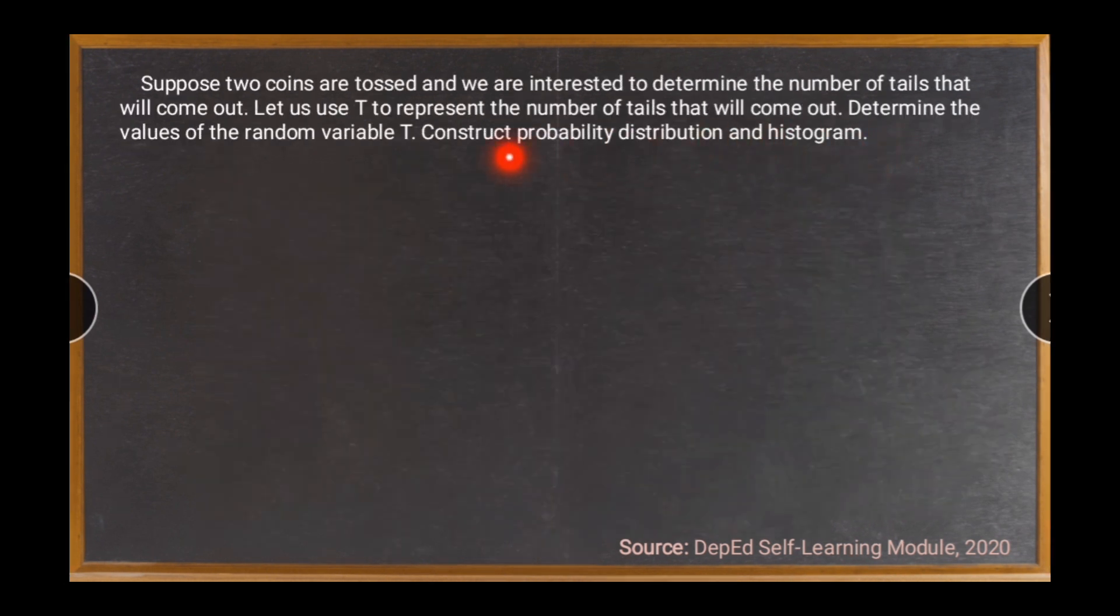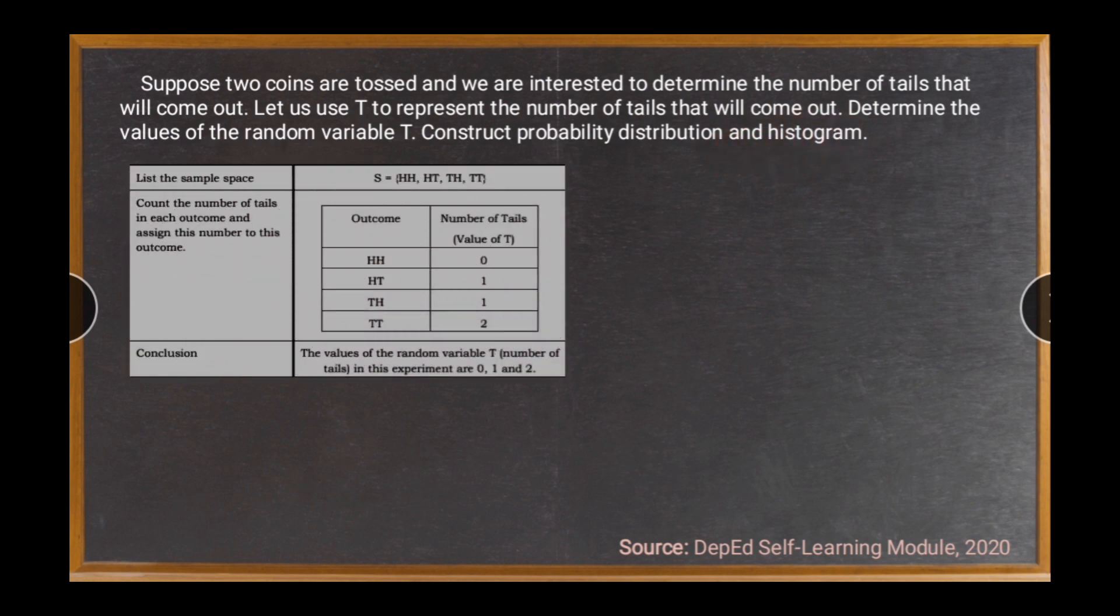We will consider again the given situation, but we will add another requirement that is construct probability distribution and histogram. So for our solution, we will consider again our previous output because we will also use similar scenario. And remember that I'm going to use also code switching for you to understand better our discussion here, my explanation. It means magtatagalog ako paminsan-minsan.